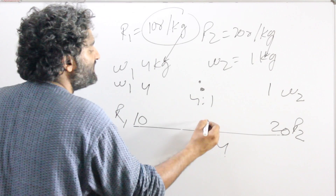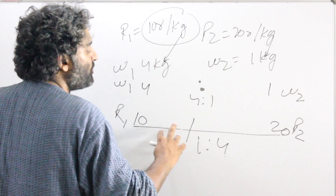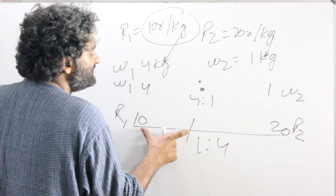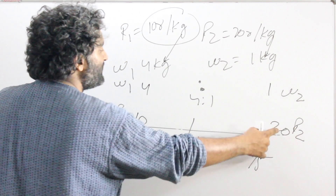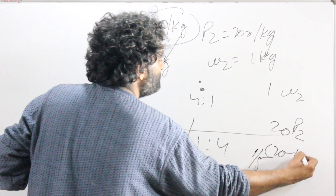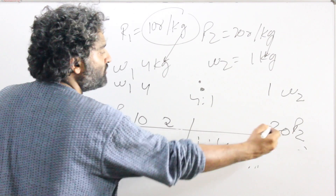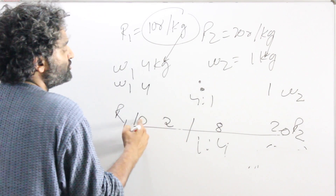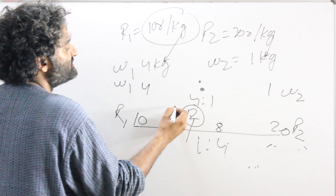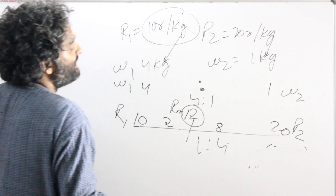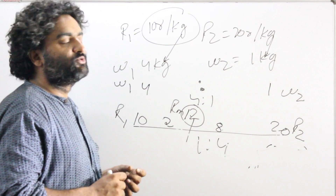This means the scale has to be divided into two parts — one part which is 1/5 of the total and the other 4/5. So 1/5 of the whole thing, which is 20 minus 10 equals 10, gives us 2. So this part is 2 and the other part is 8. Therefore 10 plus 2 equals 12, or 20 minus 8 equals 12. So I get my mean rate as 12 rupees per kg. Once we get the hang of this method, it could be faster in many situations.